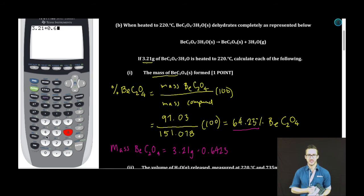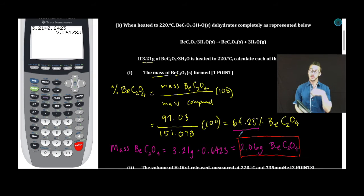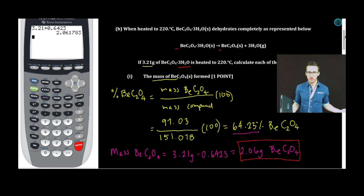Calculator! 3.21 times 0.6423. I get 2.06 grams. Now, let's think about this. My 3.21 gram sample is about 64% of the beryllium oxalate salt. The remaining 36-ish percent is mass contributed from the water. Now, you can also tackle this using stoichiometry. You are given a one-to-one relationship here. So, you could determine the number of moles of the hydrated compound, recognize you're going to get the same number of moles of the anhydrous salt, and then multiply that by a smaller mass. Why did I choose to do it this way? Personal preference. You can still get full credit if you do it using stoichiometry.